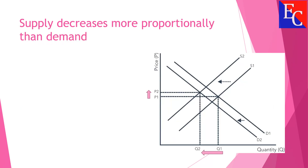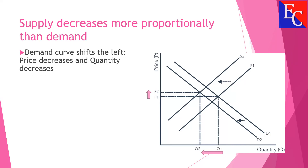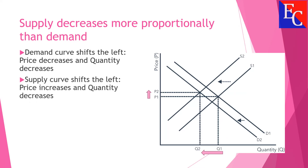Supply decreases more proportionally than demand. Due to decrease in demand, the demand curve shifts to the left — price decreases and quantity decreases. Due to decrease in supply, the supply curve shifts to the left — price increases and quantity decreases.